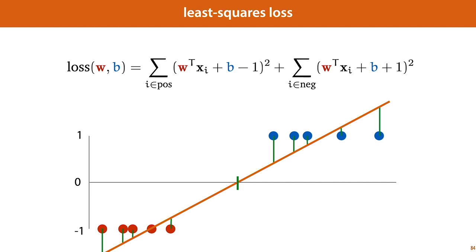So written as a formula, our loss function as before is a sum of squares, but we divide the dataset into two subsets, the positive points and the negative points. The positive points we give the label 1, and the negative points we give the label minus 1. And we fit a linear function to this dataset as we did before with regression.